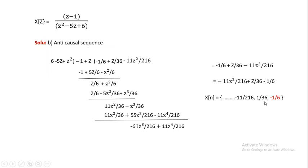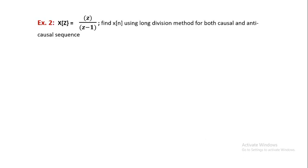So for the anti-causal sequence, x(n) = {-1/6, 1/36, -11/216, ...}. This division process can be continued further if more values are needed. Now let us consider the second example, where X(z) = z / (z - 1). Here we find x(n) using the long division method for both causal and anti-causal sequences. As we know, z/(z-1) is the most common term used in the Z-transform.